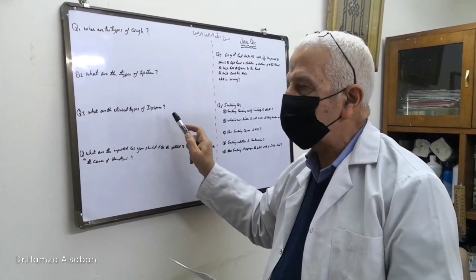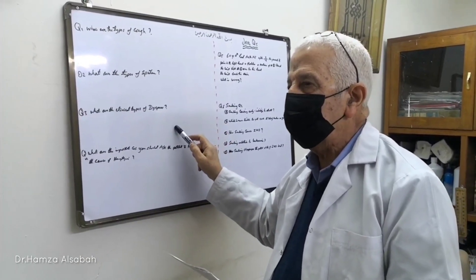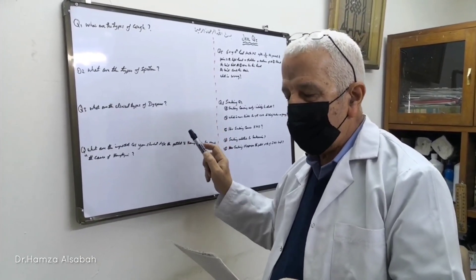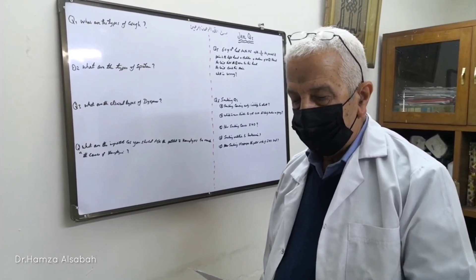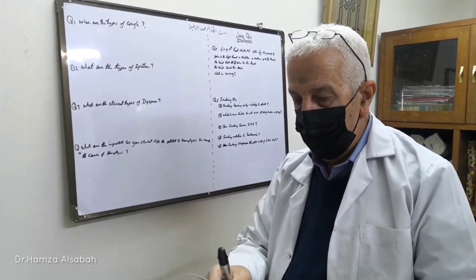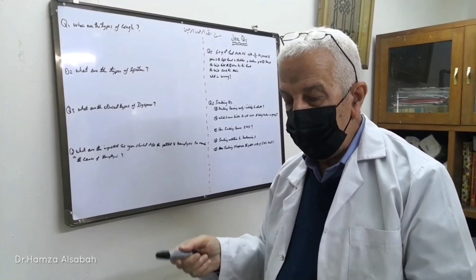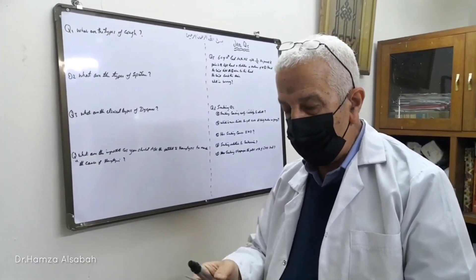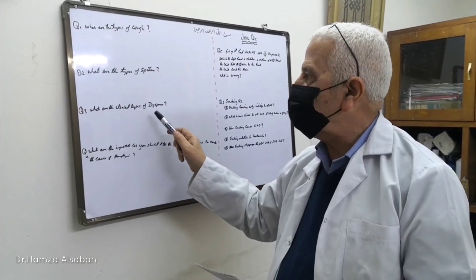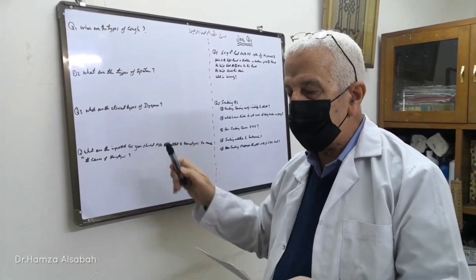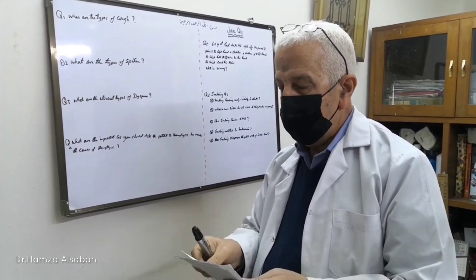Dyspnea on cessation of exercise is exercise-induced asthma. It usually occurs within five minutes after cessation of exercise — this is the early reaction — and a delayed reaction occurs after 20 minutes.